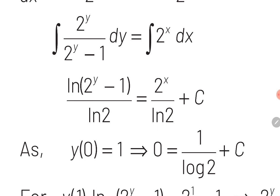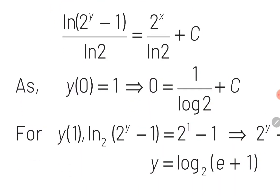When we substitute 2^y - 1 = t, then 2^y · dy becomes dt / log_e(2). The integral of 1/t gives log_e(t), so the left hand side becomes log_e(2^y - 1) / log_e(2). The right hand side is 2^x / log_e(2) + c. Using the condition y(0) = 1, substituting x = 0 and y = 1 gives the value of c as -1/log_e(2). Back substituting c and finding y(1) gives the final answer: y = log_2(e + 1).